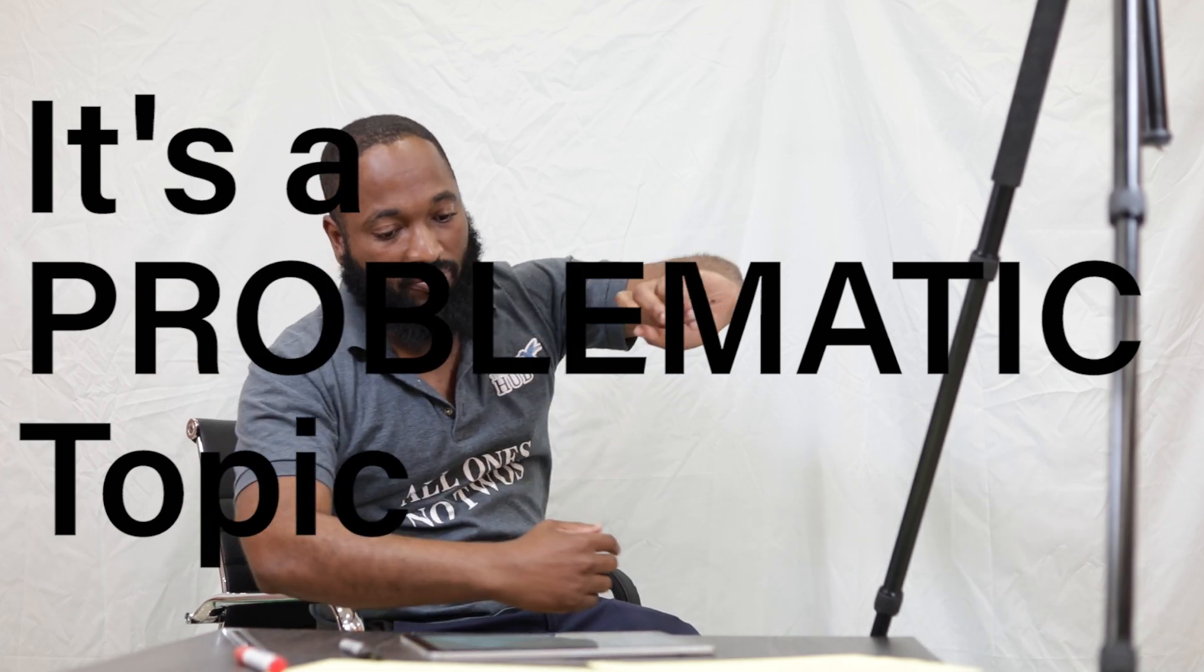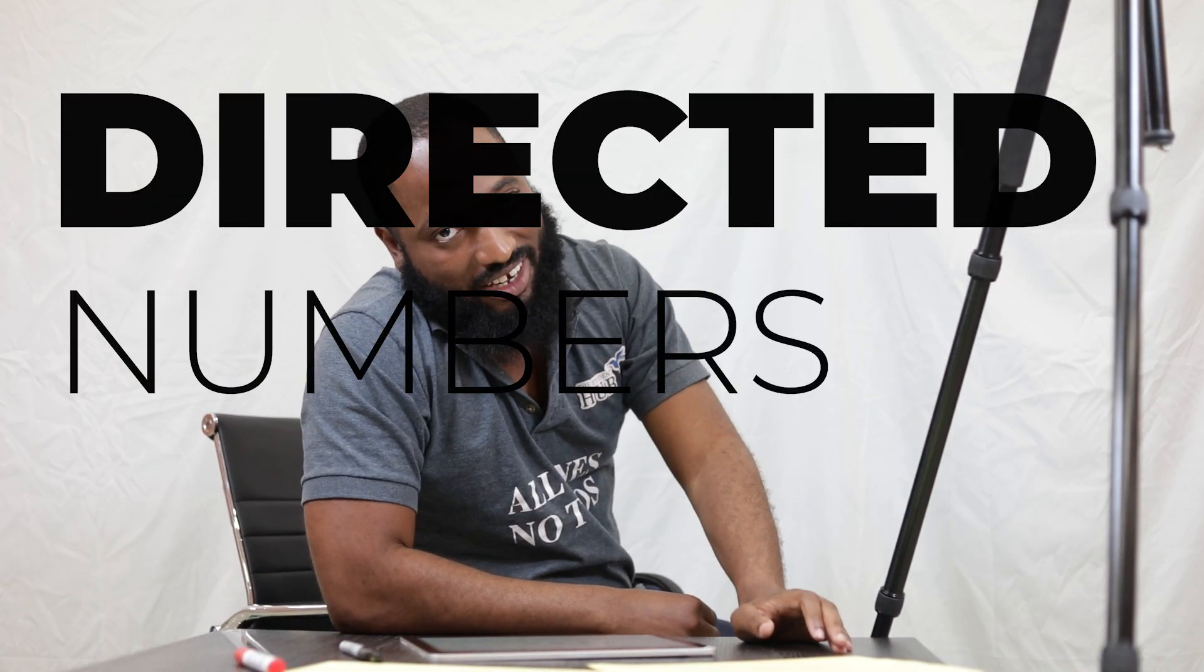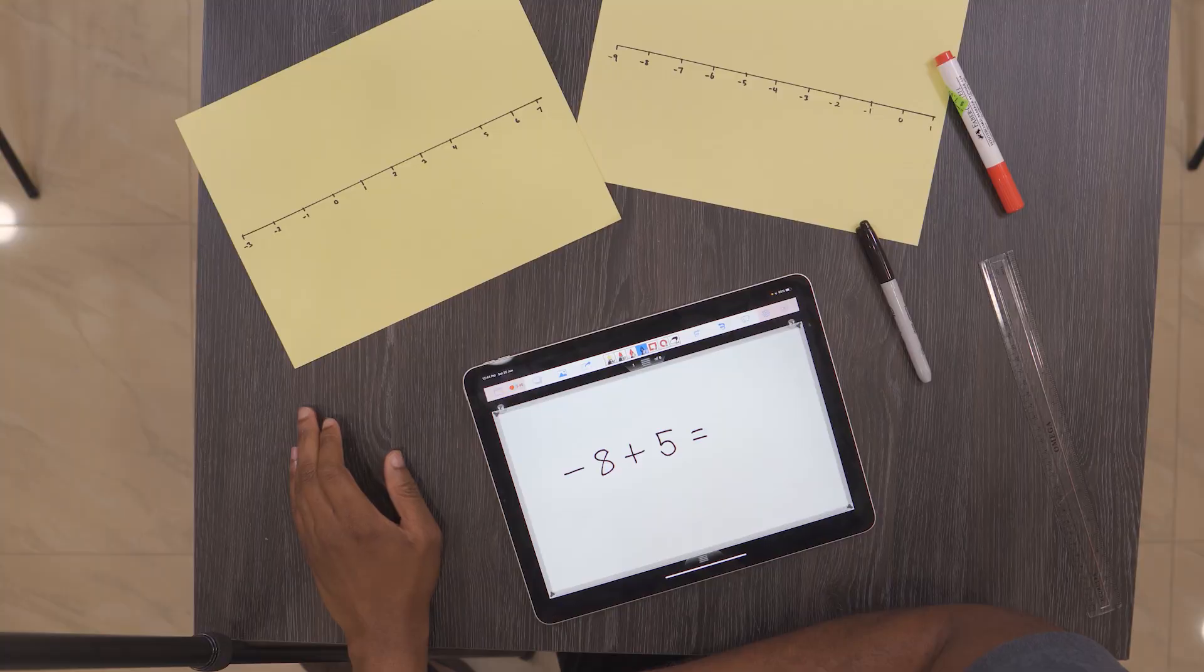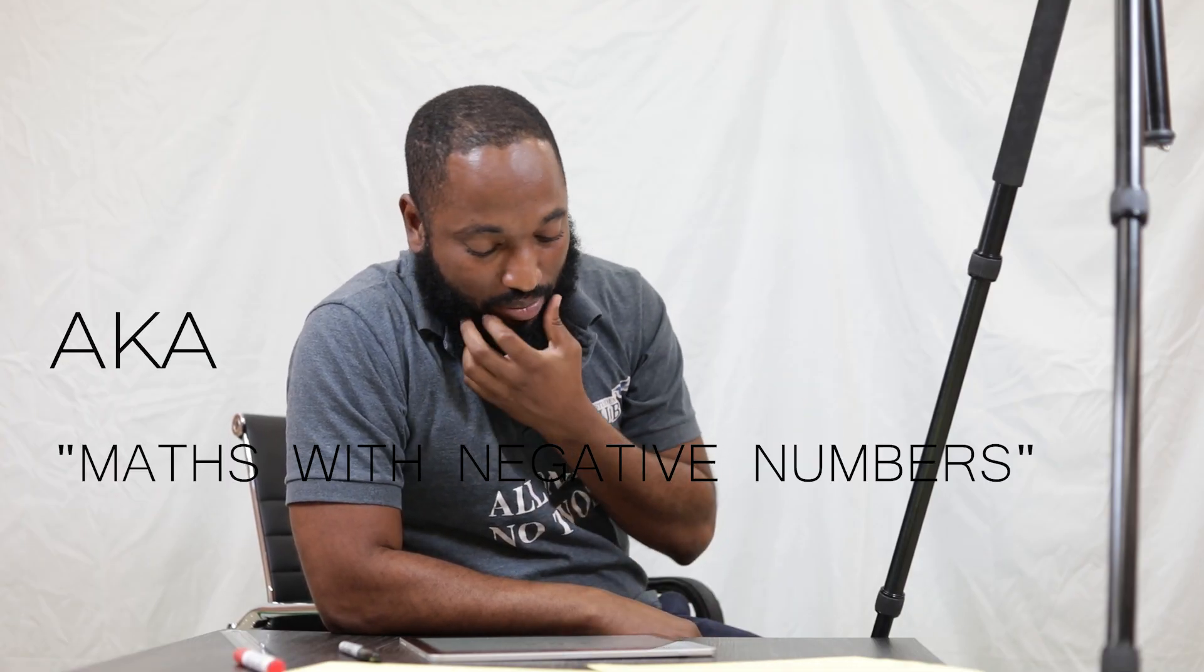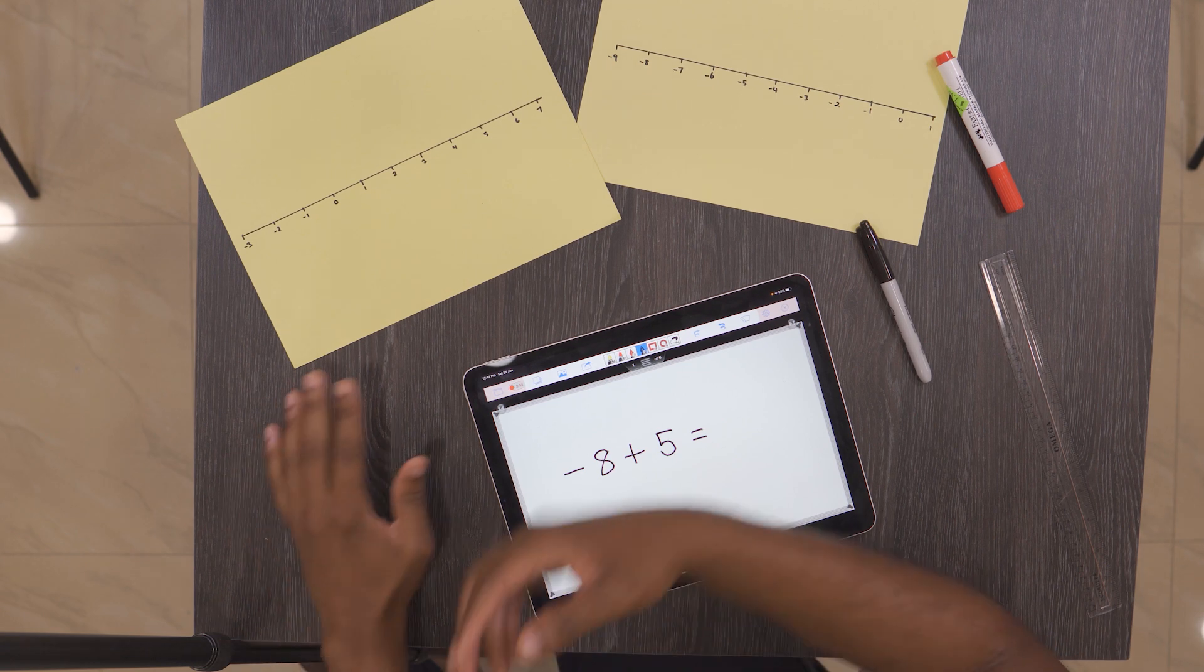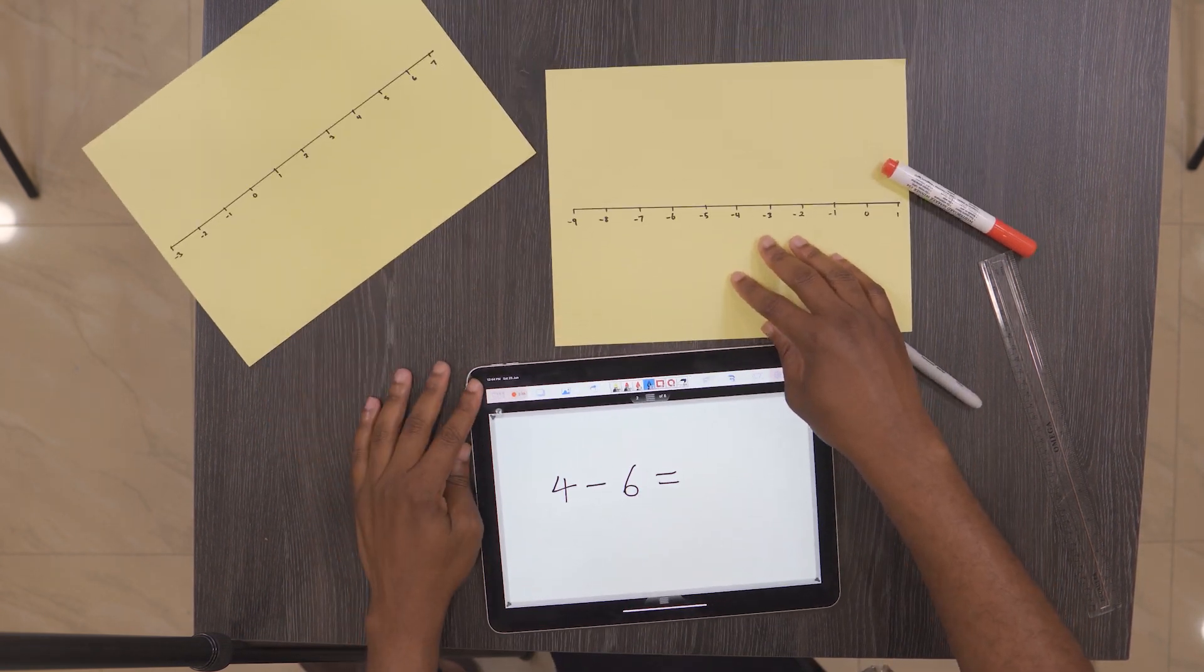It's a problematic topic for a lot of people. We call it directed numbers, you just call it maths with negative numbers. Negative eight plus five - how do we do this? The first thing they usually show you